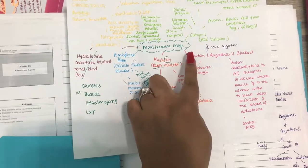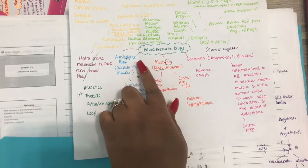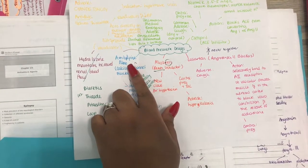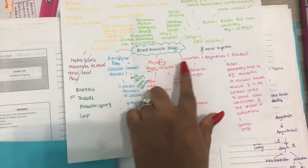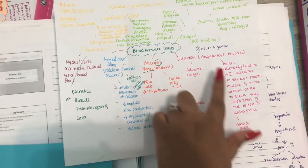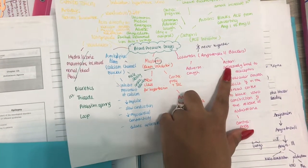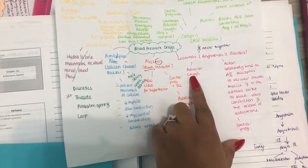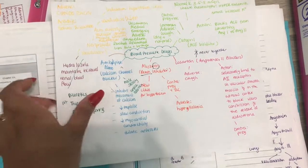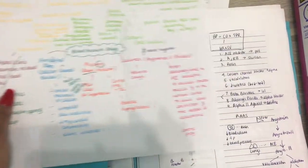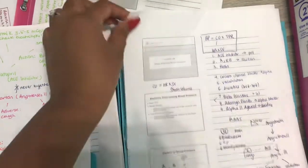So for example, these are all blood pressure drugs, and then you organize them by class. For each class you're going to write the action and the adverse effects. Now don't write all the adverse effects because every drug is going to have a whole bunch of them.